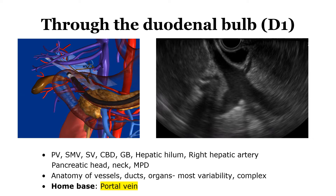Insert the scope into the duodenal bulb. We try to find the portal vein. The portal vein is a very important landmark on EOS imaging. Face the transducer along the long axis of the portal vein, with the tip of the scope toward the hilar area and liver.